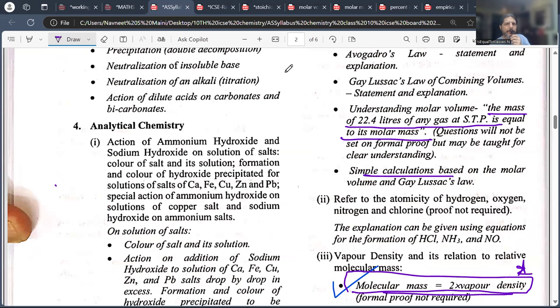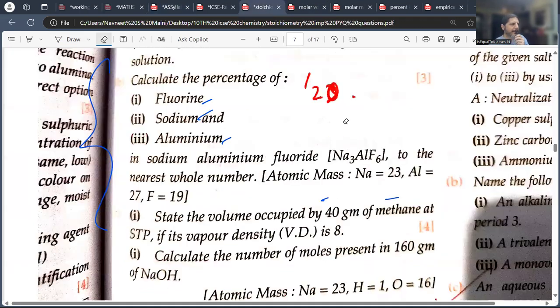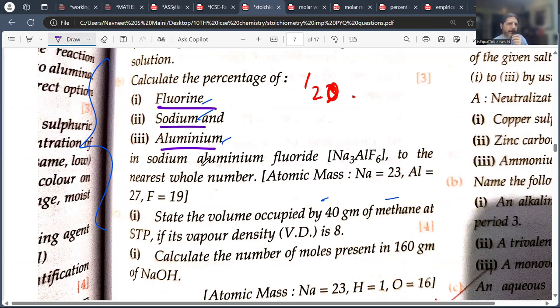So this question comes, Mr. Khan. I will tell you now. It's a simple version. Calculate the percentage of fluorine, sodium, aluminium in sodium aluminium fluoride, Na3AlF6 to the nearest whole number.